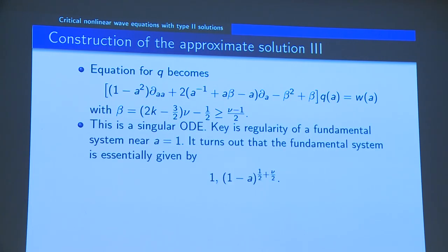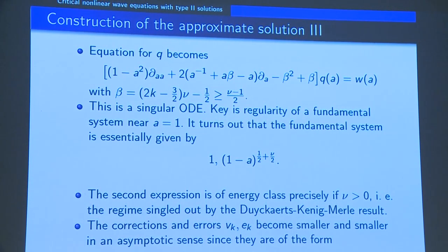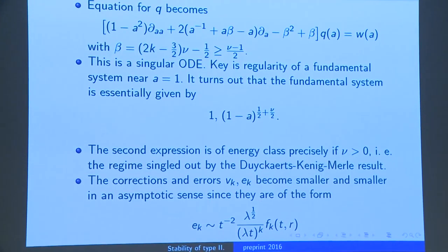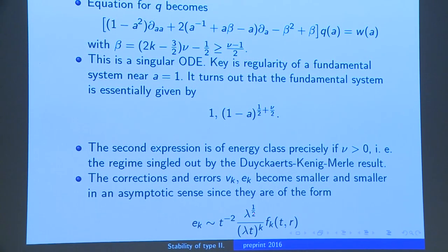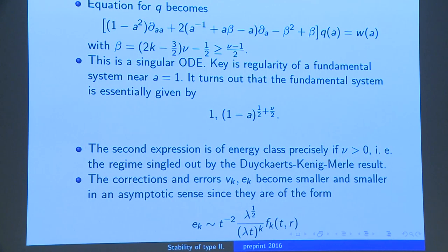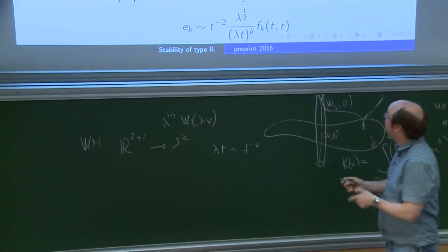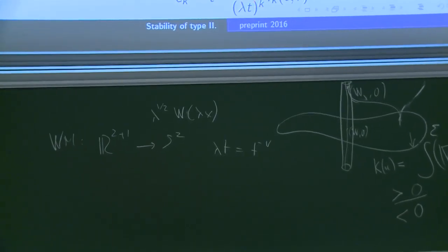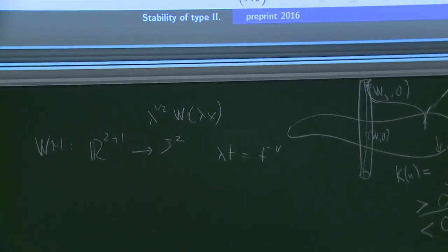You can write down a fundamental system of solutions for this ODE. If you then compute the error terms generated in this scheme, you see they decay faster and faster. The expression λ(t)·t — where λ = t^{-1-ν} — gives λt = t^{-ν}, which becomes smaller and smaller as k becomes larger. As you let k go to infinity these errors in some sense disappear.